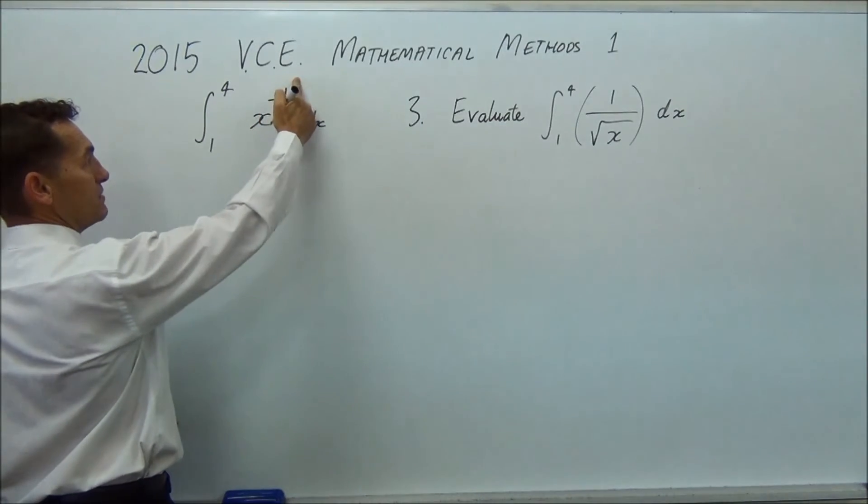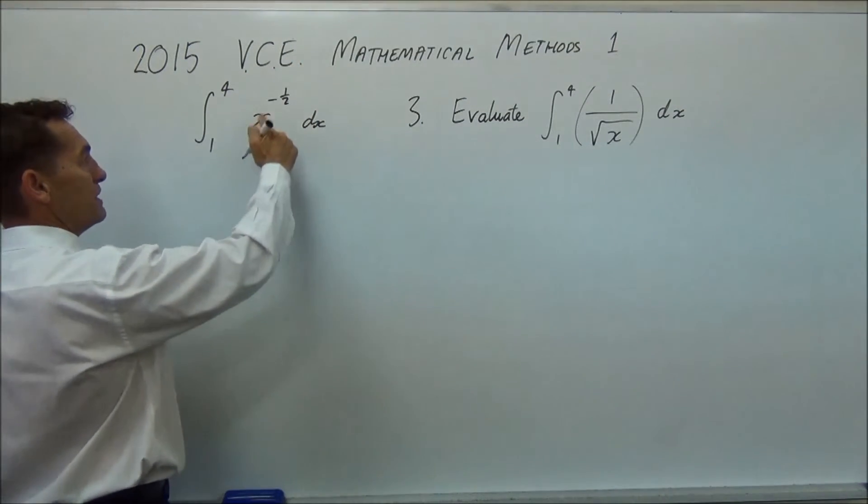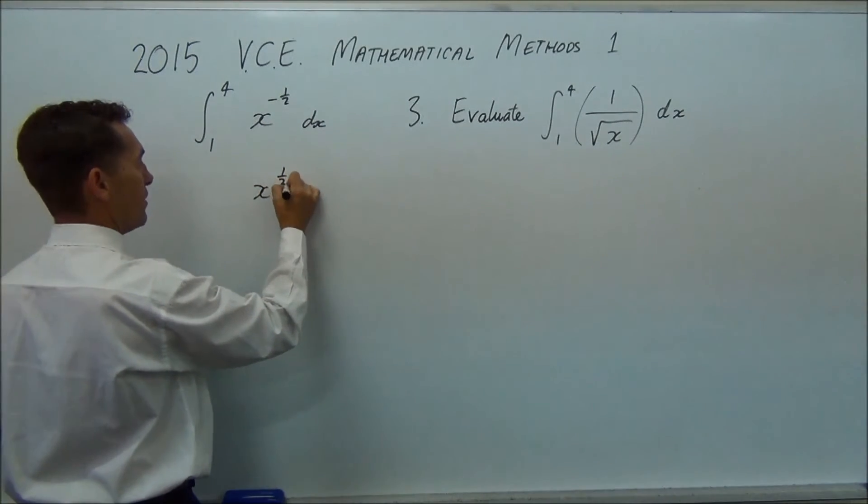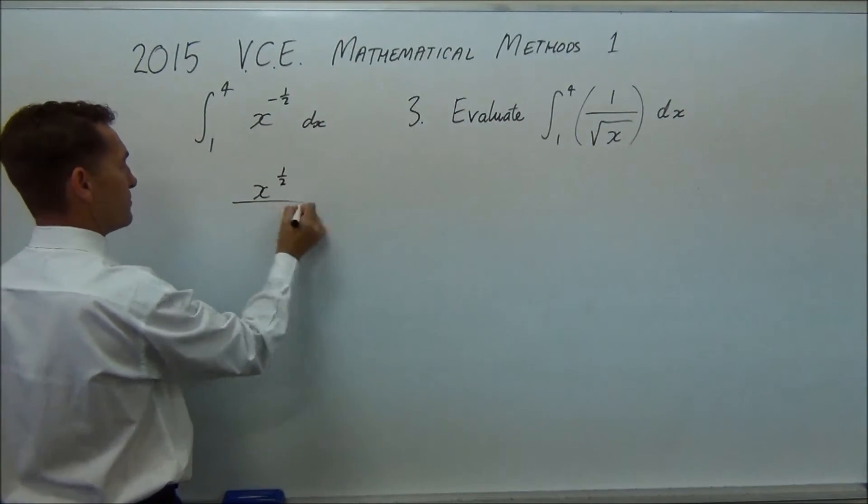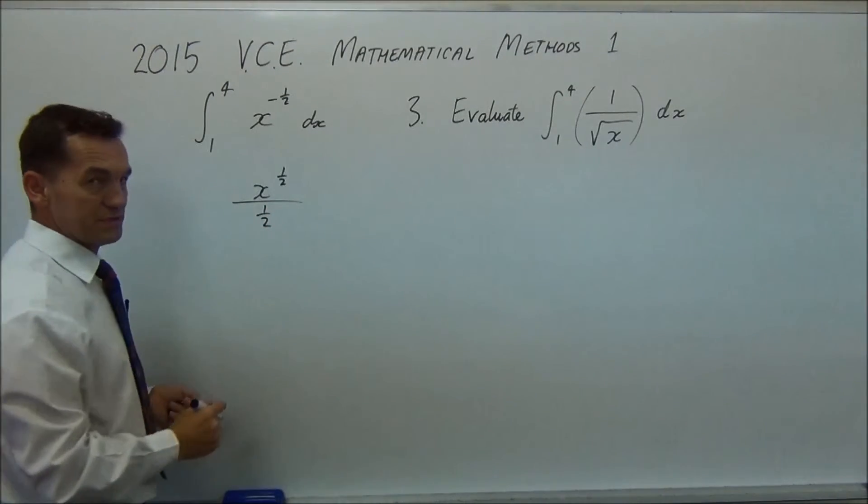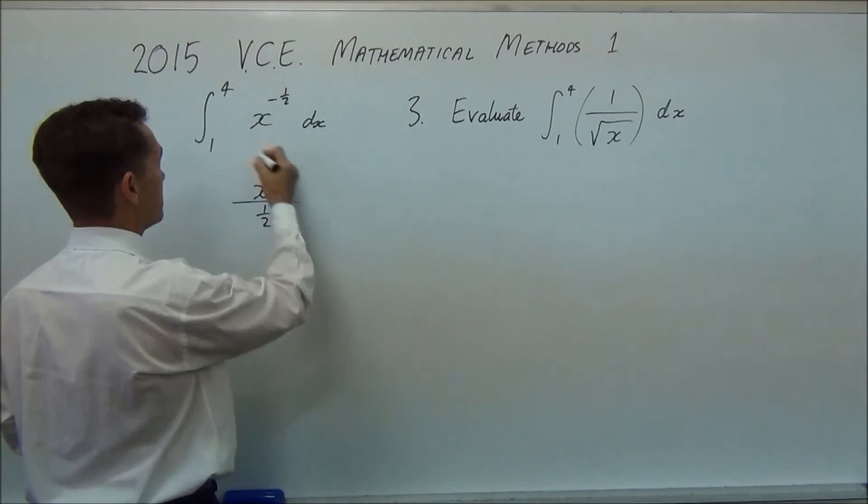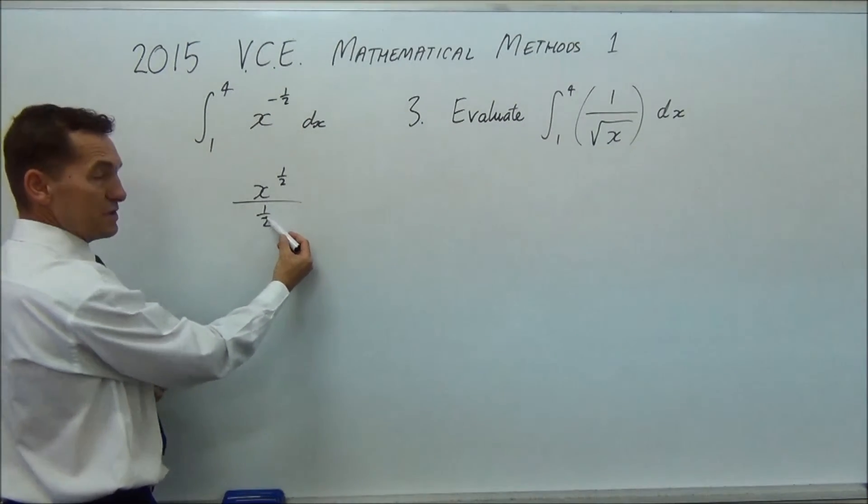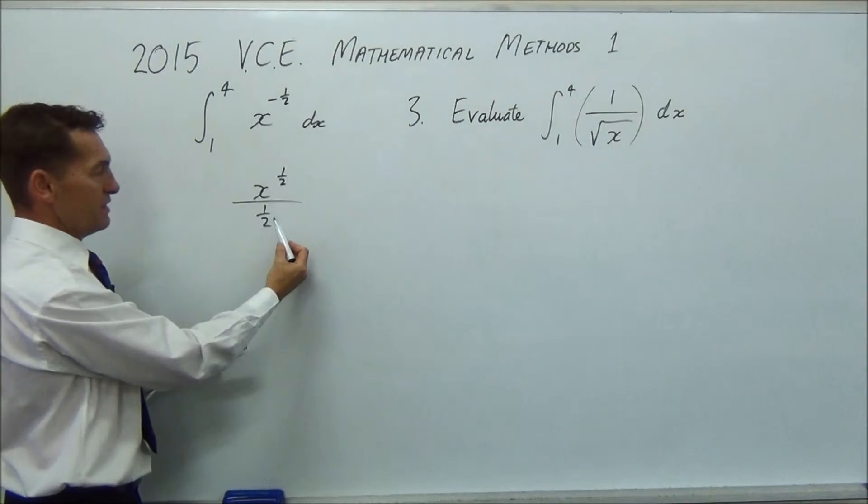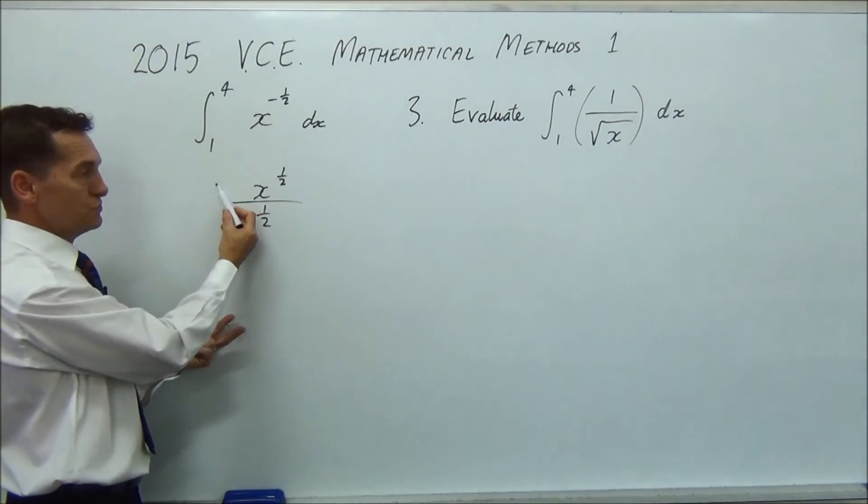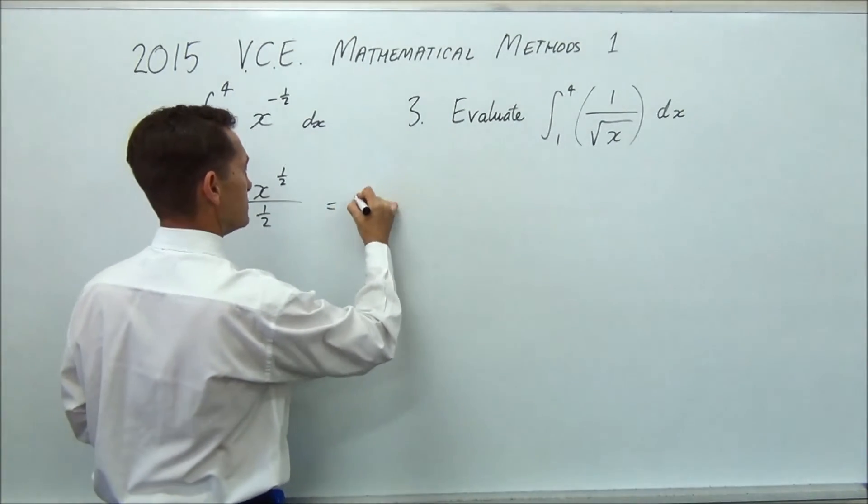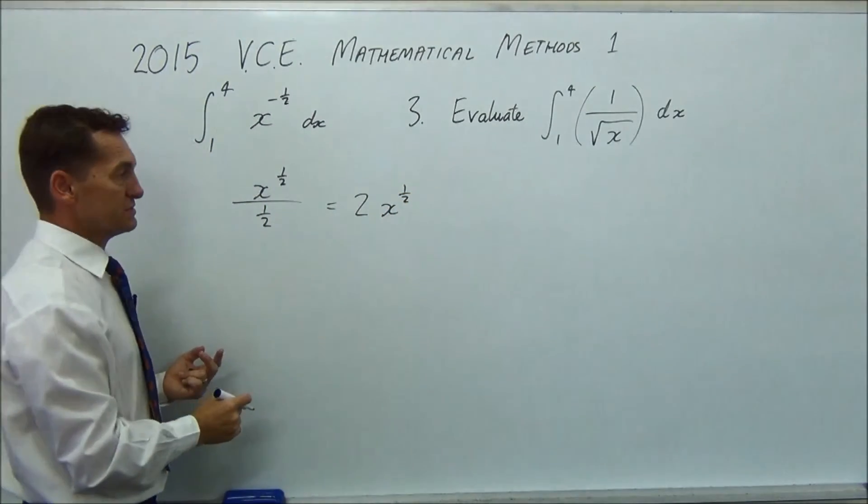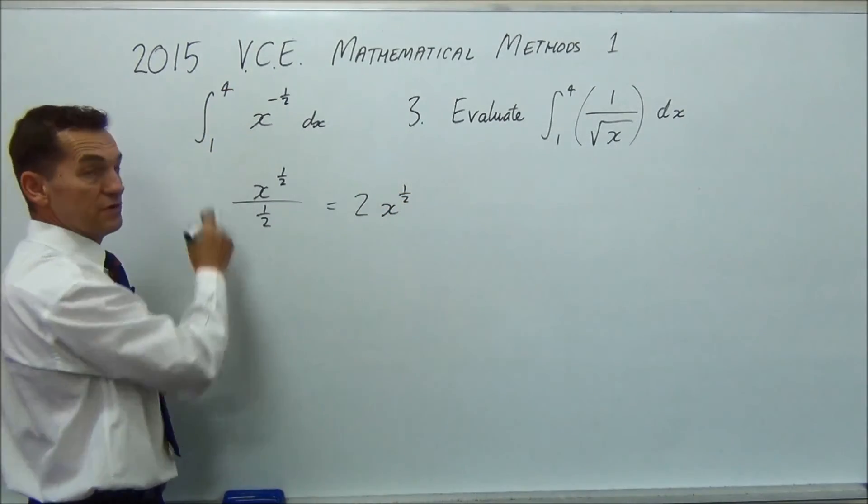Integrate that. Raise it to a power. Put the new power underneath. So if you raise that to a power, it becomes half. Put the new power underneath. And that's your answer. You want to do that between 1 and 4. So this divided by a half, what does that mean? That half can go up here and become a 2. So that will equal 2x to the half, or 2 root x. Then you've just got to put in 4 and 1.